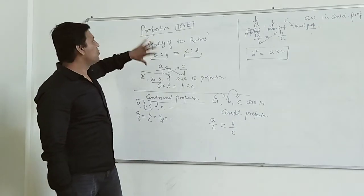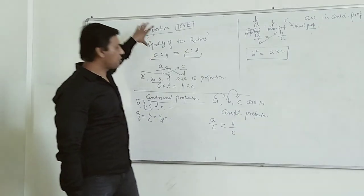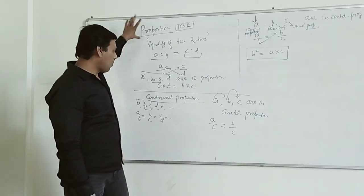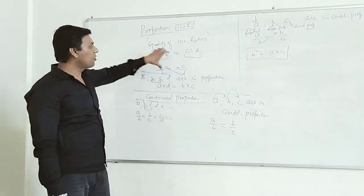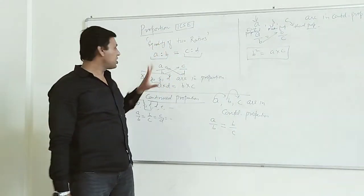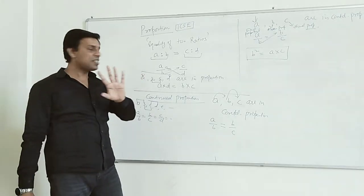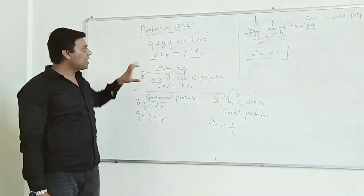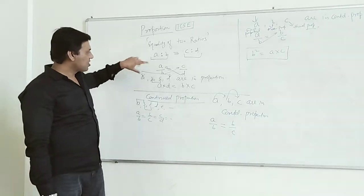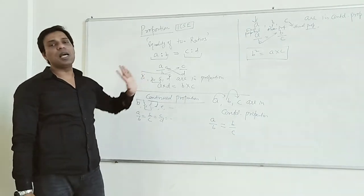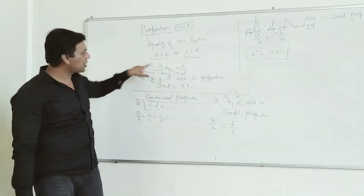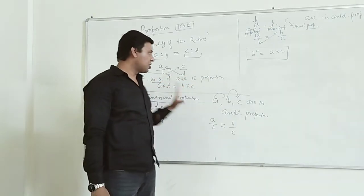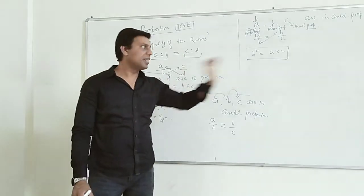Don't get confused between proportion and continued proportion. For proportion there are four terms A, B, C, D. If they are in proportion, A upon B equals C upon D, or the product of the extreme terms equals the product of the middle terms. This is called proportion.